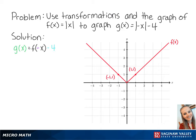g(x) is equal to f(−x) − 4. The negative x means that we will reflect the graph over the y-axis. However, the graph of f(x) is identical on both sides of the y-axis, so the graph of f(−x) is not going to change.